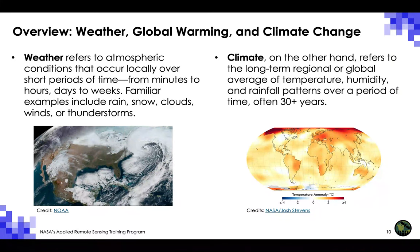Weather refers to atmospheric conditions that occur locally over short periods of time, from minutes to hours and days to weeks. Familiar examples include rain, snow, clouds, wind, or thunderstorms. Most weather happens in the troposphere. There are many factors that can change the atmosphere in a certain area, such as air pressure, temperature, humidity, wind speed and direction, and other things that together determine what the weather is like at a given time and location.